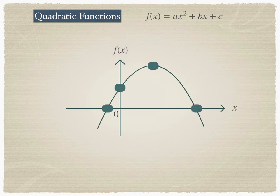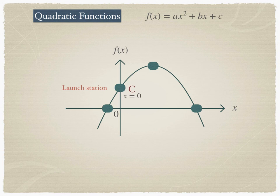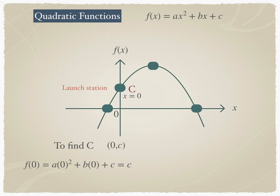Let's take a closer look at these points. At the launch station, the distance between the rocket and the launch station is zero, so x equals zero. To find point c, you just plug zero into the function, giving you the point (0, c). For the landing positions, the height of the rocket is zero since it has reached the ground, meaning f of x equals zero.